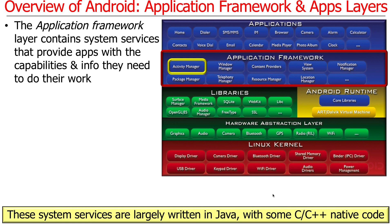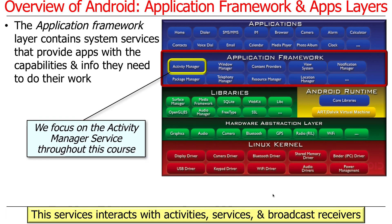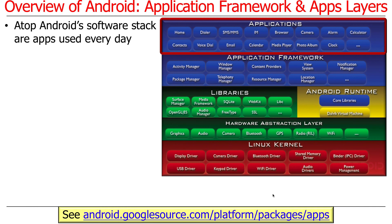One of the most interesting system services is the activity manager, which is largely written in Java with some C and C++ native code for things that need to run efficiently. Even though it's called the activity manager, it actually manages activities, services, and broadcast receivers — all sorts of Android components in your system. The activity manager is like a police officer that time-slices, manages, and coordinates the launching and execution of all these things. It's a gigantically huge piece of code, but very, very powerful.